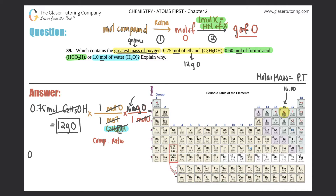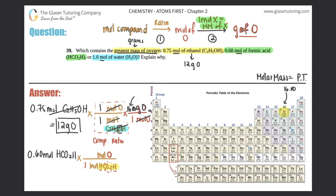Now let's try the second one: 0.60 moles of formic acid, which is HCO2H. We do the compound ratio first, then the molar mass. We multiply by a ratio — we don't want moles of formic acid, so mole of HCO2H goes on the bottom and moles of oxygen goes on top. If we have one mole of the entire compound HCO2H, how many oxygens are there? Two. So two moles of oxygen equals one mole of the entire compound, and that cancels out the moles of formic acid.